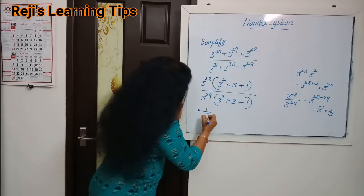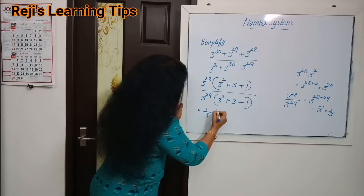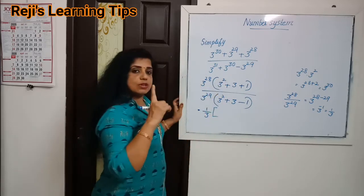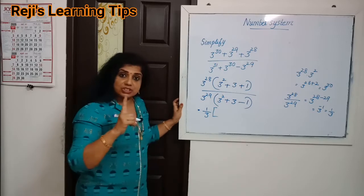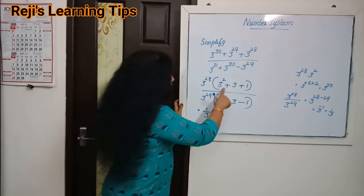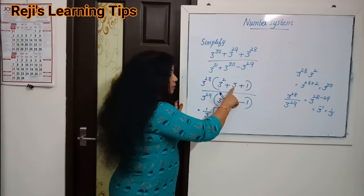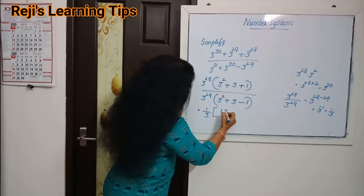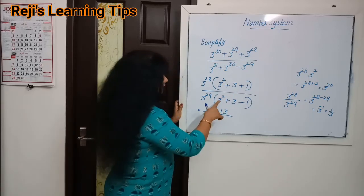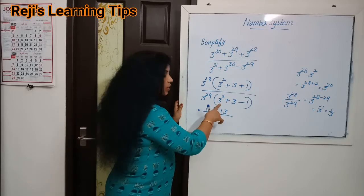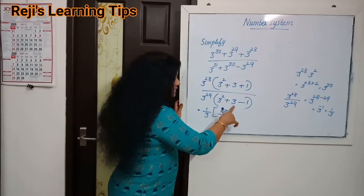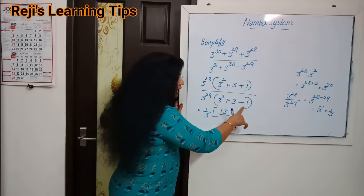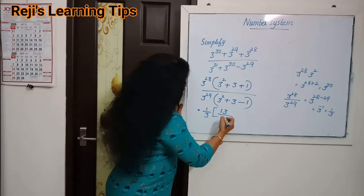Now we have 1 by 3 into: 3 square plus 3 plus 1, in the numerator. 3 square means 3 into 3, that is 9. So 9 plus 3 is 12, plus 1 is 13. In the denominator: 3 square is 9, plus 3 is 12, minus 1 is 11. Wait — the denominator becomes 3 square plus 3 minus 1, giving 9 plus 3 minus 1, that is 11.